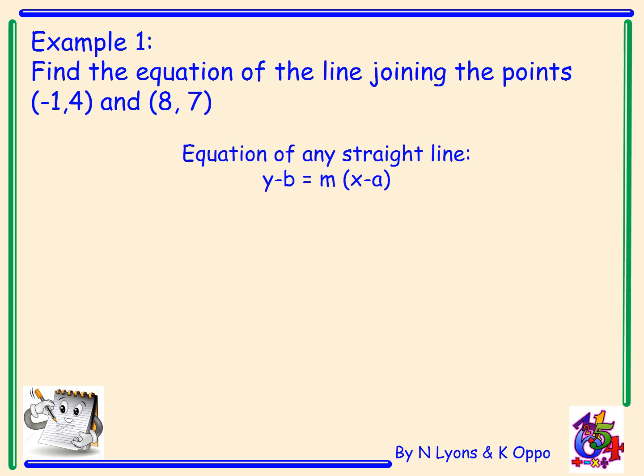So let's get started. The equation of any straight line is given by y minus b equals m(x minus a). Now gradient equals m, so we have to first of all work out what the gradient is between these two given points. So the gradient equals the change in y over change in x—that's the change in vertical divided by the change in horizontal—and you might have seen that as y2 minus y1 divided by x2 minus x1.